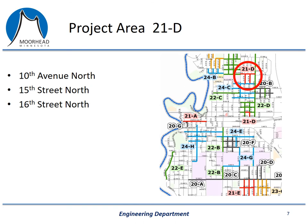Now we'll get to the project-specific information. Shown on this slide is a portion of our five-year CIP map. This includes all of the projects we're proposing to do in the next five years. I've circled the project 21D — that is the project in your neighborhood. It's 10th Avenue North from 14th Street to 17th Street, and 15th and 16th Street from 8th Avenue to 10th Avenue. There's another portion of 21D to the south near 1st Avenue, but that project will be a separate project and bid under a separate contract.